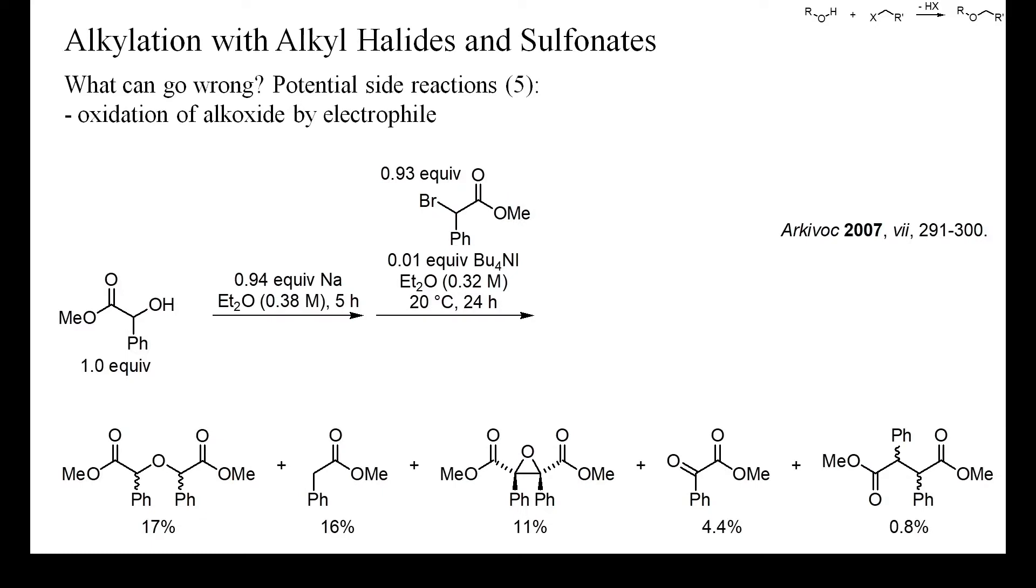Alkyl halides with electron-withdrawing groups at the halogen-bearing carbon can act as electrophilic halogenating reagents or oxidants. In this example, only 17% of the expected ether resulted, and a large part of the electrophile was reduced to methylphenylacetate. All the other major by-products were formed from the reduced and oxidized starting materials.